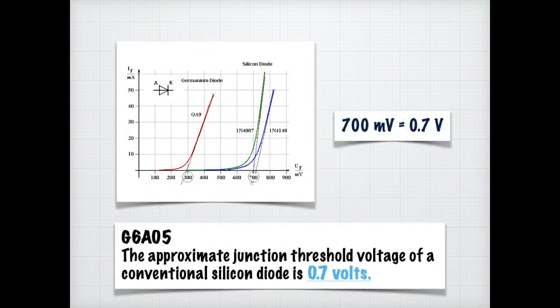As I mentioned in an earlier slide, when we were talking about germanium diodes, the approximate junction threshold voltage of a conventional silicon diode is 0.7 volts, or 700 millivolts, as we can see by this chart.